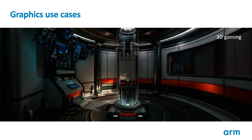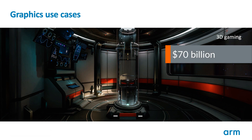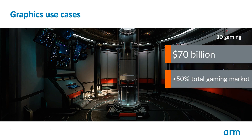The first graphics use case that most people think of is 3D gaming, with its high-quality real-time rendering of three-dimensional environments. Recent years have seen a surge in high-end 3D gaming on mobile, with hugely popular titles such as Fortnite and PUBG making the leap from PC and console platforms, as well as many mobile-first titles such as Honor of Kings. In 2018, mobile gaming had total revenues of approximately $70 billion, accounting for just over half the total worldwide gaming market.